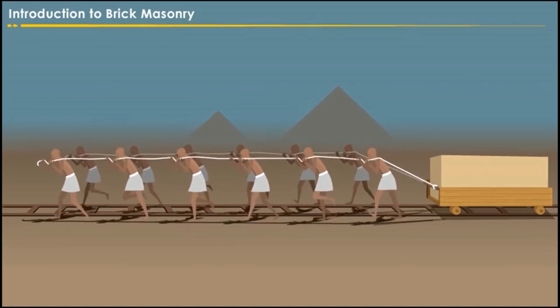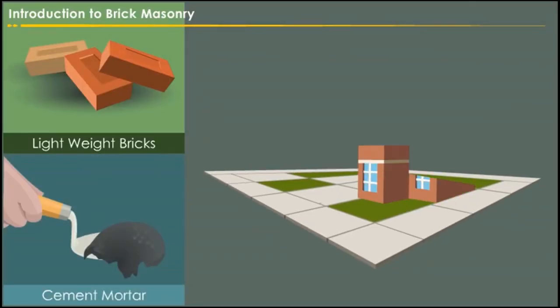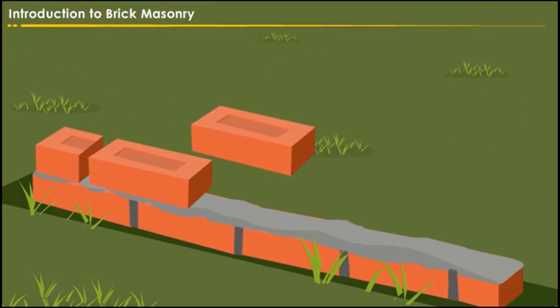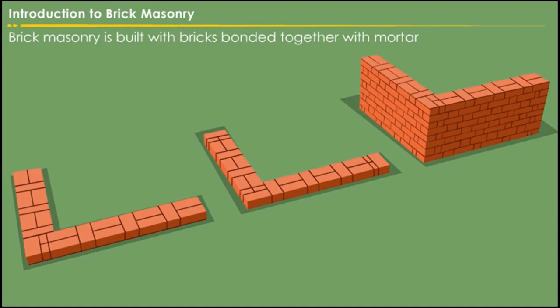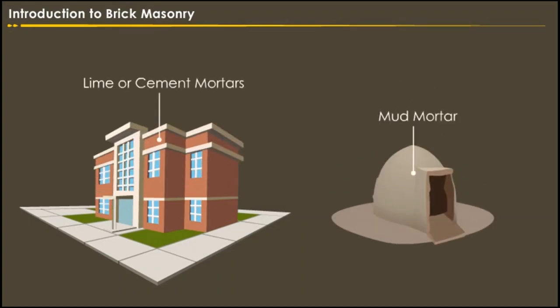Slowly, people started to use lightweight bricks and cement mortar. For the purpose of constructing, different types of bonds are followed. Brick masonry is built with bricks bonded together with mortar. For permanent buildings, lime or cement mortar are used, but for temporary sheds, mud mortar may be used. Let us discuss the bricks and different types of bonds in brick masonry in detail.